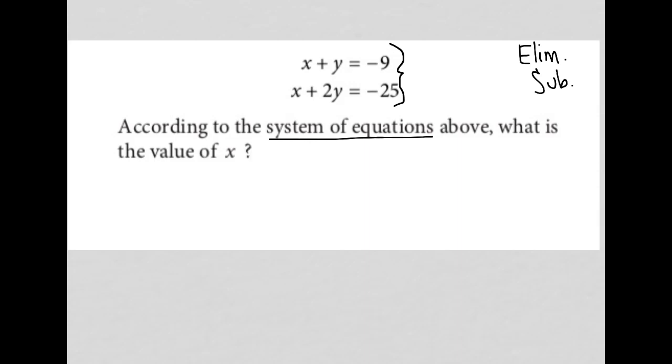We're looking for the value of x. If we want to use elimination, there are two ways to do this. I can eliminate the x term by subtracting the entire second equation. That, however, would lead my x to cross out. I'd be left with negative y equals—sorry, it's already negative 25, making it positive 25. Negative y would equal positive 16, which means y would equal negative 16. But,